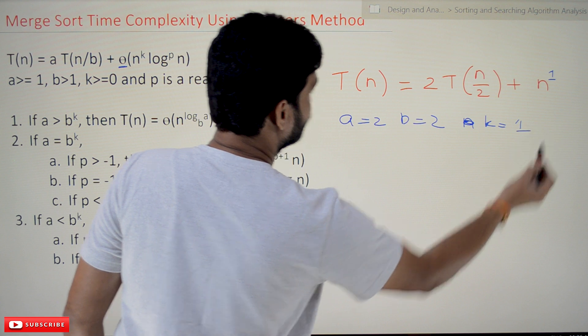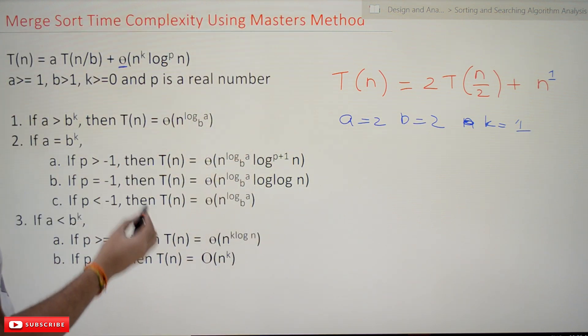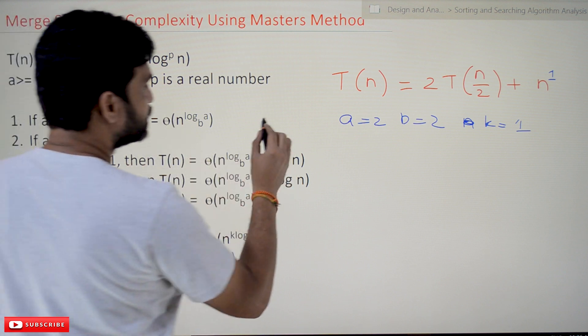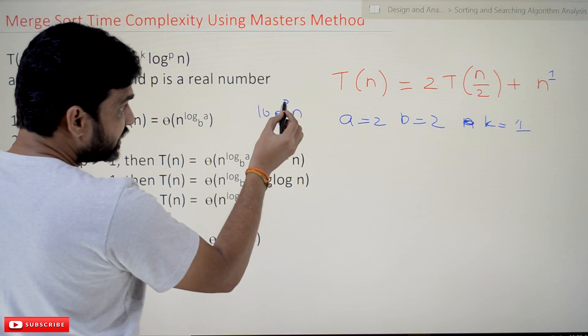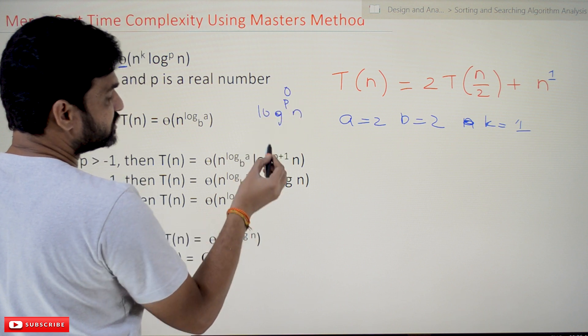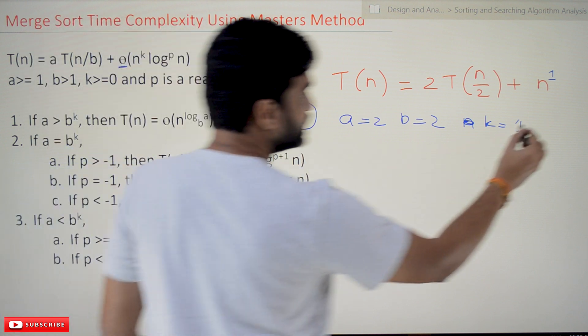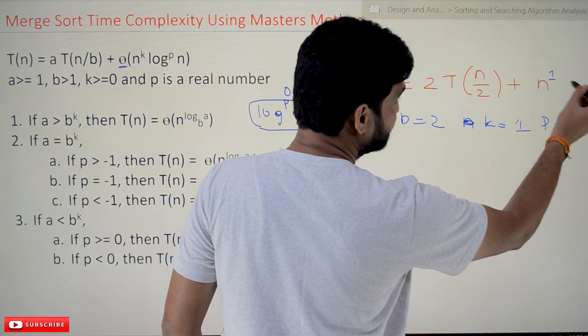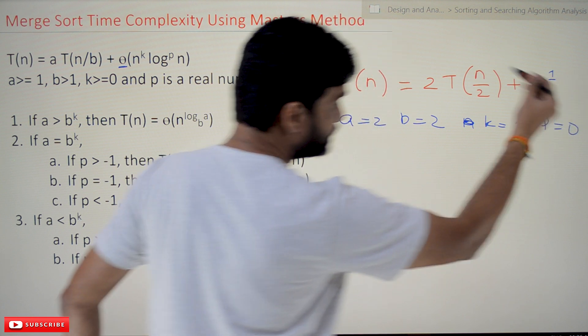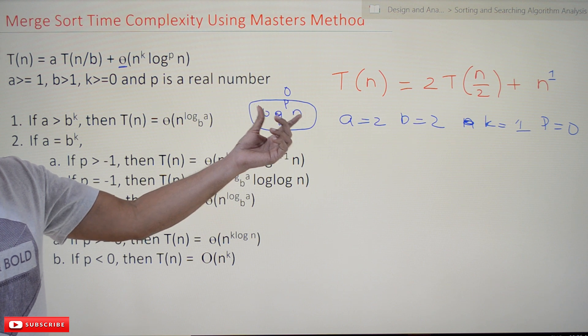And log^p(n), here log^p(n) means if the value of p is equal to 0, then this one will not be there, right? So the value of p is equal to 0. It may not be there, but p where the value of p is equal to 0 means no such log is existing. So the value of p is equal to 0.